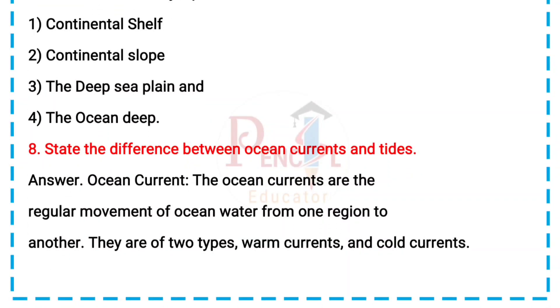8. State the difference between ocean currents and tides. Answer — Ocean currents: Ocean currents are the regular movement of ocean water from one region to another. They are of two types: warm currents and cold currents.